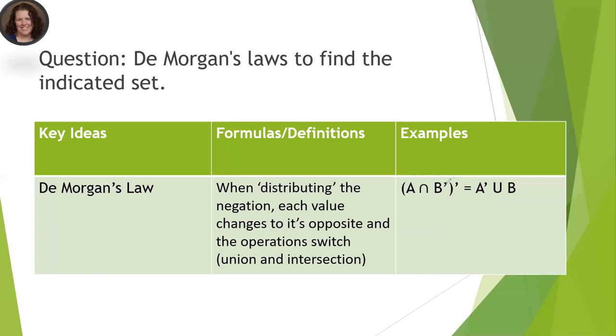So here's another example I wanted to show you. So here we have A intersect B prime. So we're going to distribute this negation. So the A goes from just regular A to not A. The B, because it was negated, it just becomes a regular B. And the intersection changes to union.